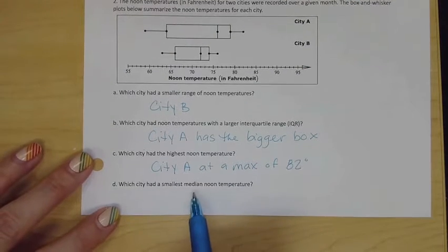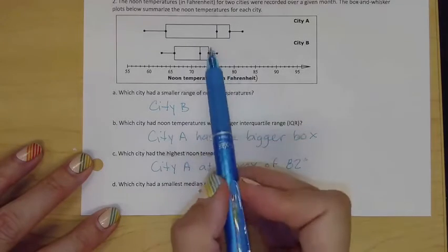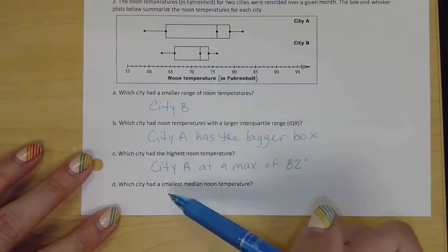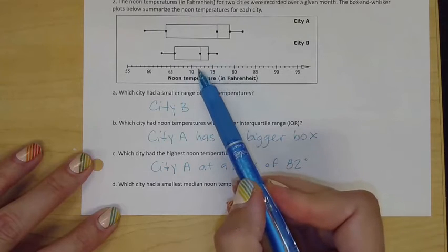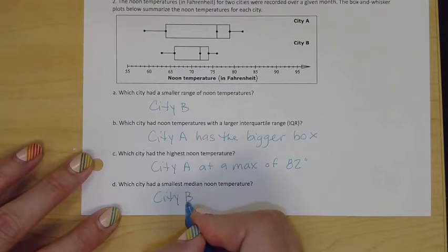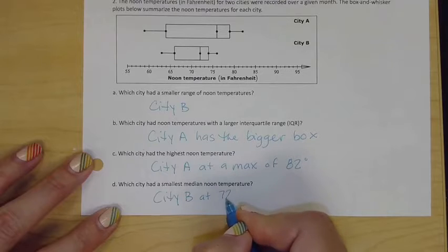Which city had the smallest median? Just a reminder, median is the middle slash here inside the box. The smallest median is this one at 72, so City B at 72 degrees.